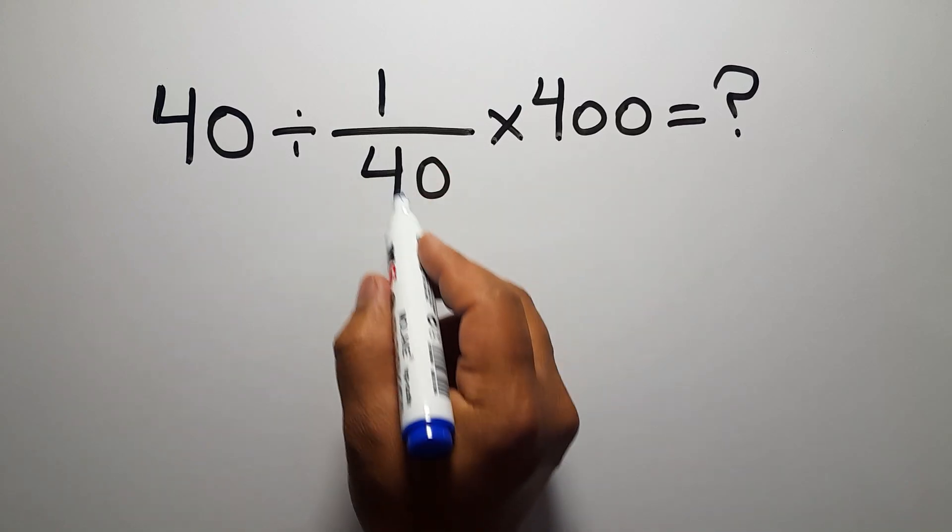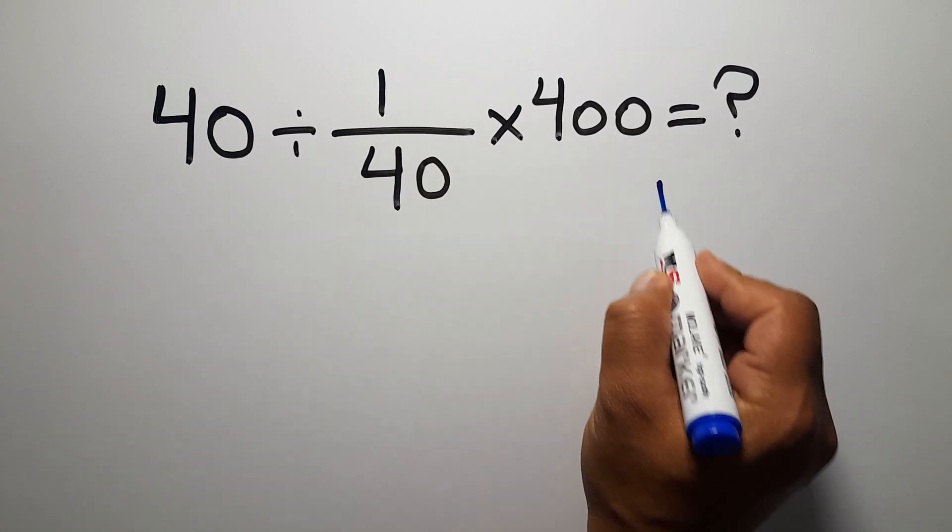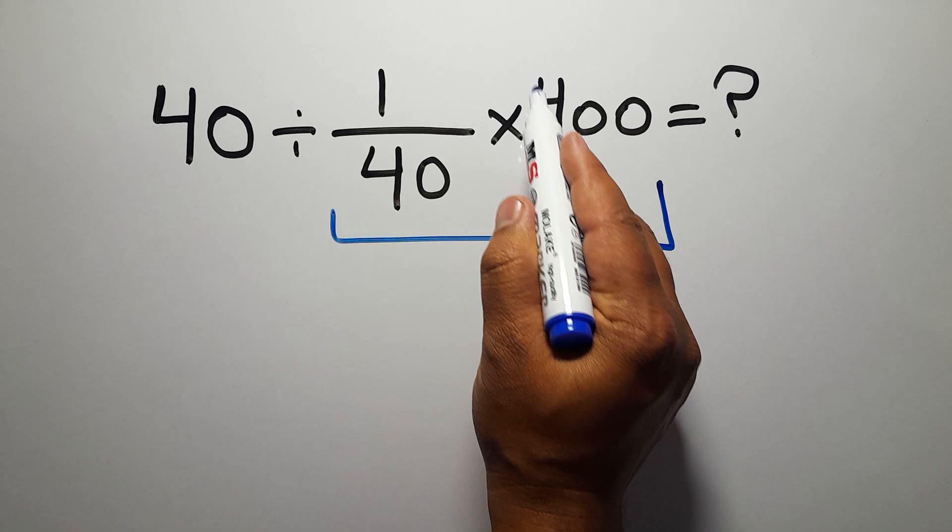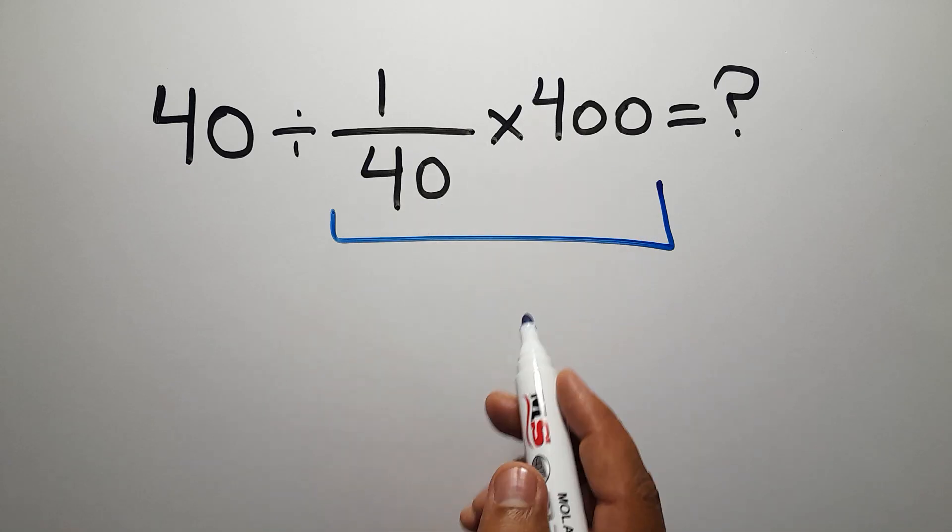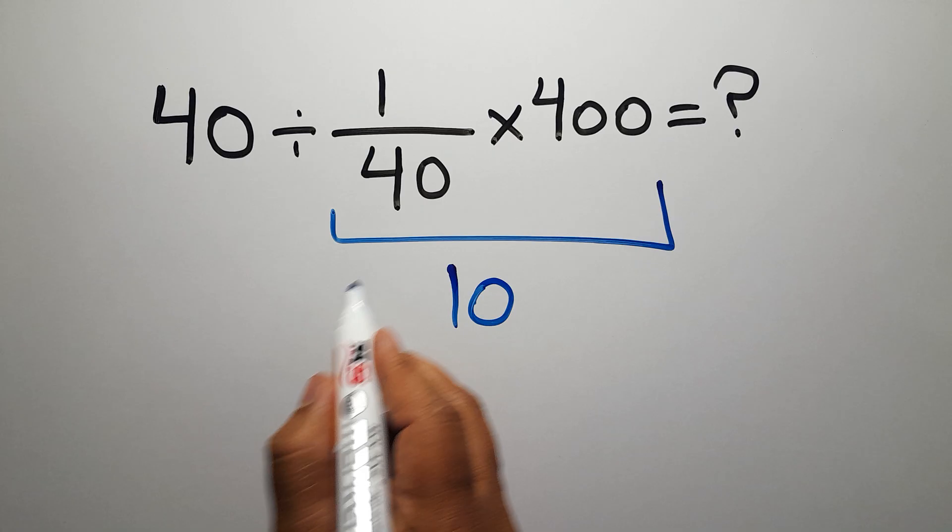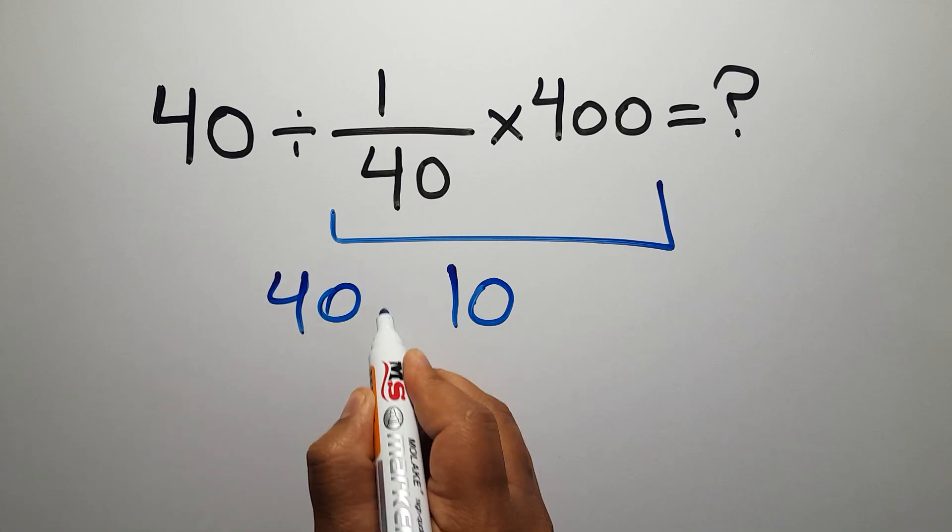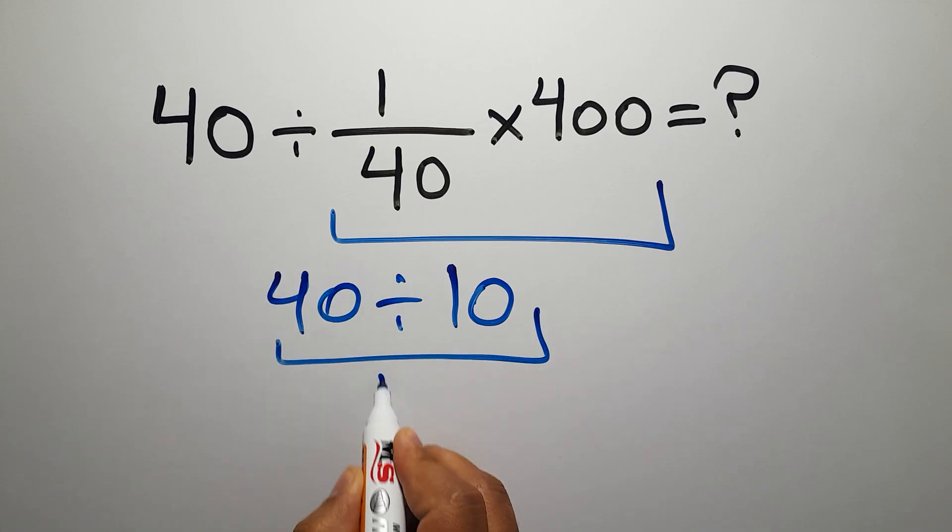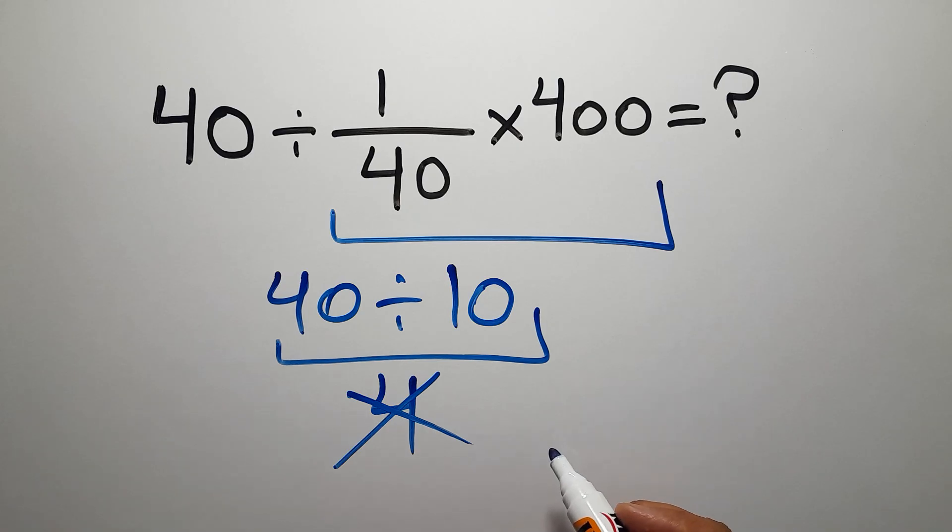First we do this multiplication: 1 over 40 times 400. We can say 400 divided by 40, which equals 10. So 40 divided by 10 equals 4. But this answer is not correct because according to the order of operations...